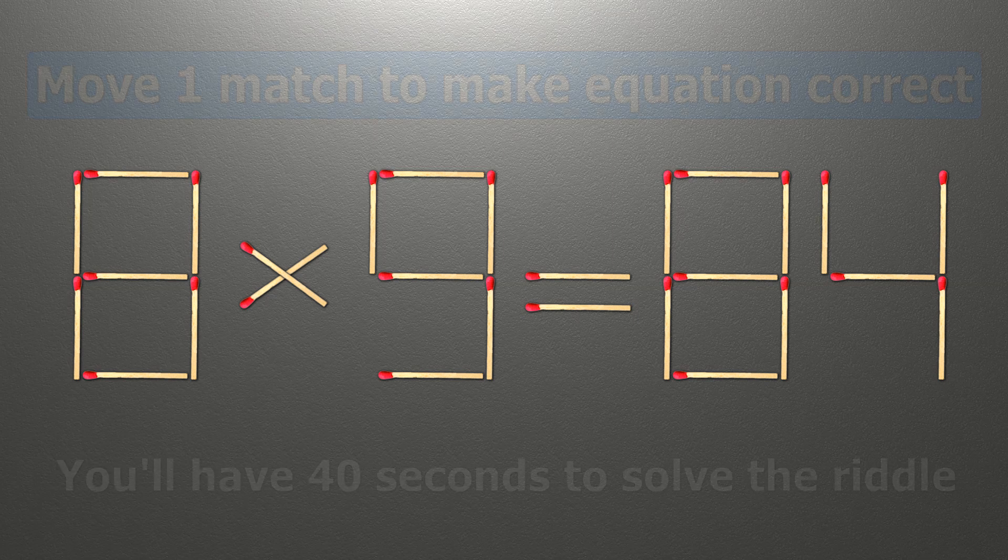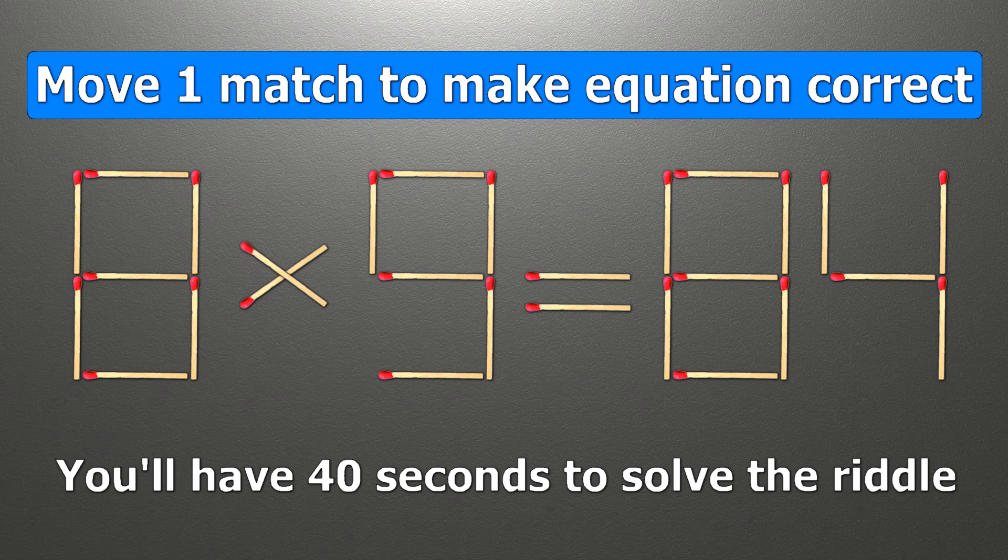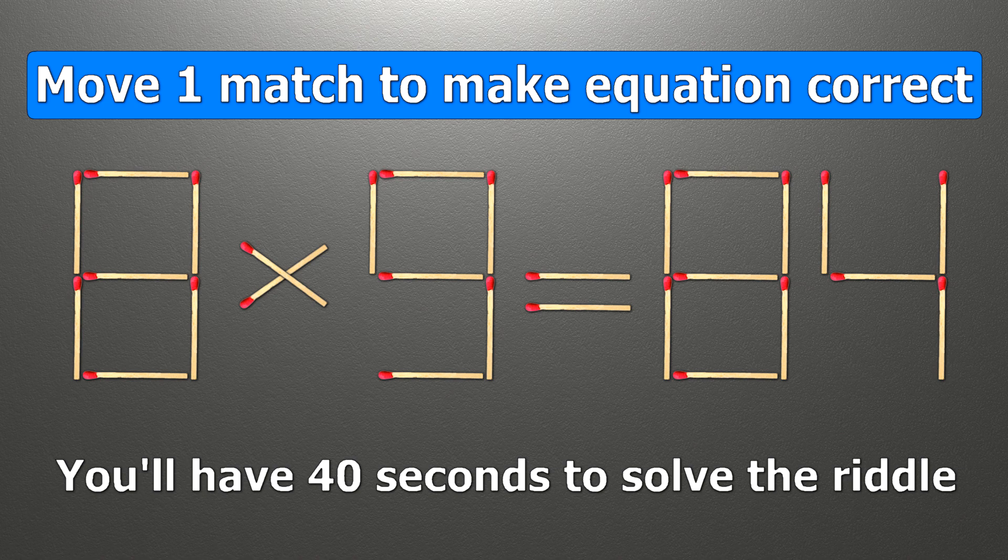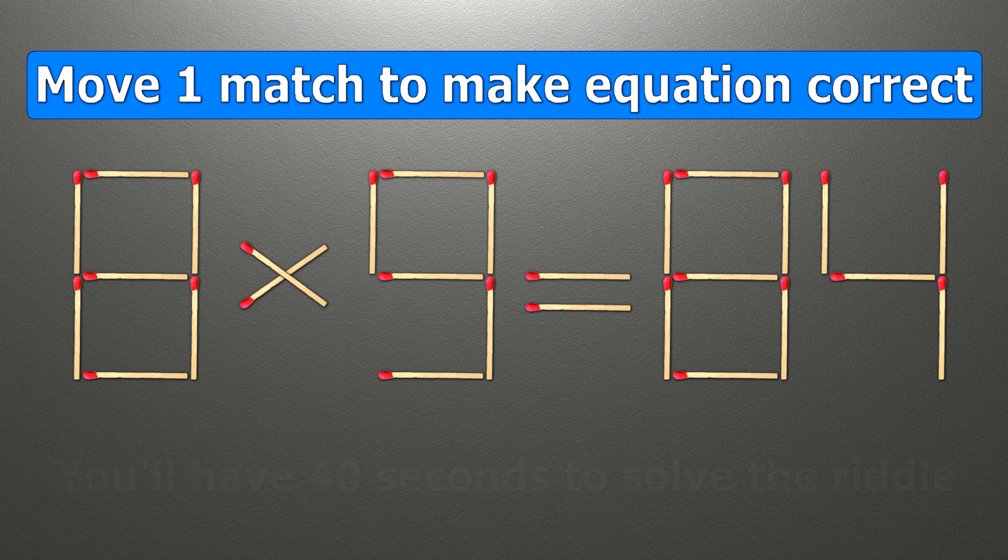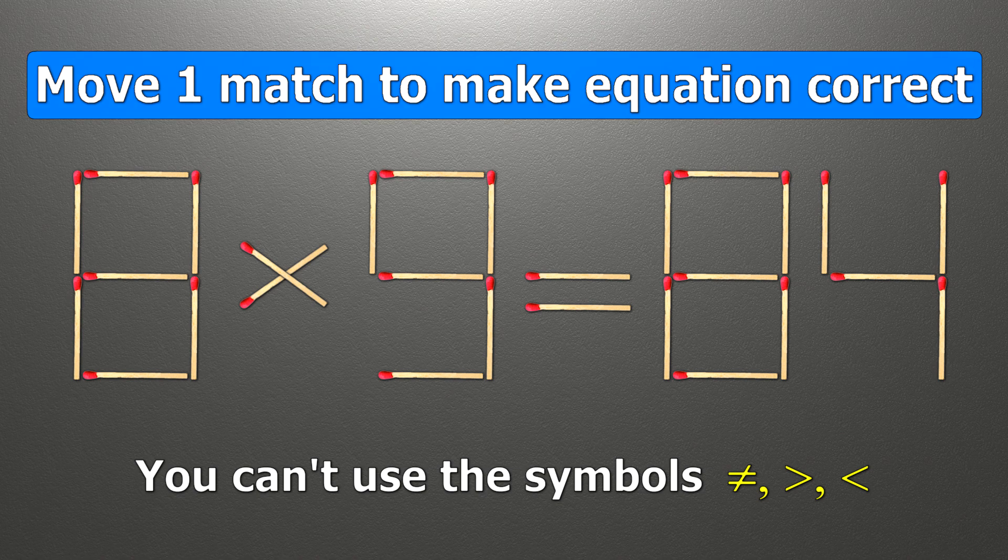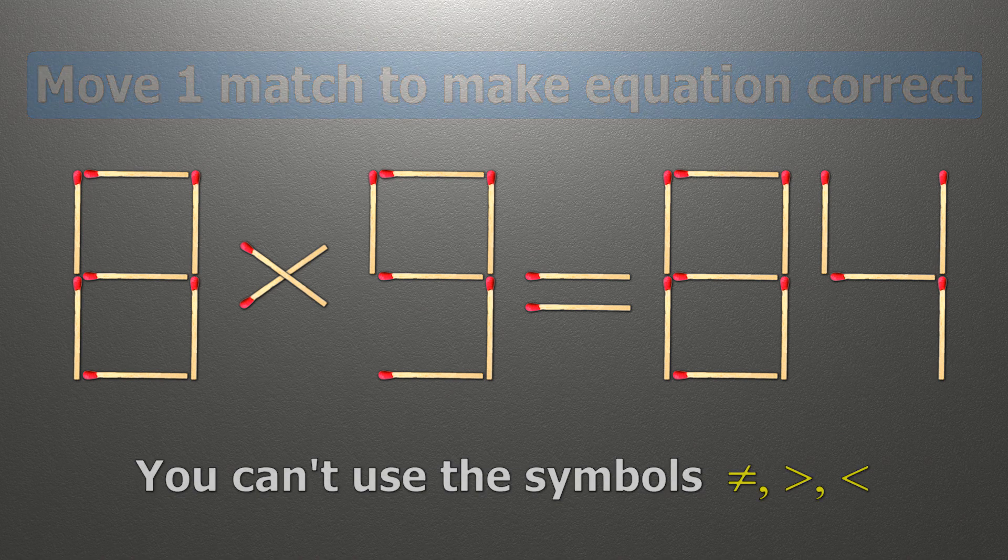Hello. We have the equality 8 times 9 equals 84. Our equality is wrong. We need to move one match to make our equality correct.